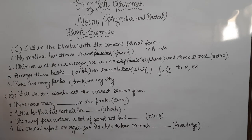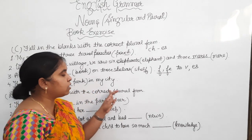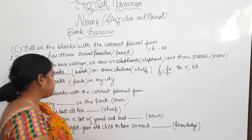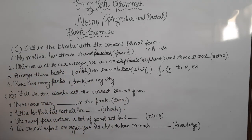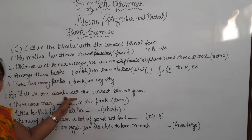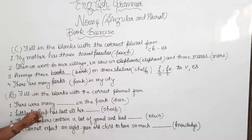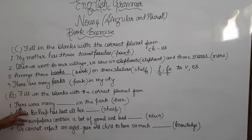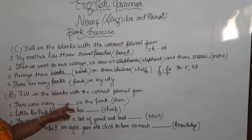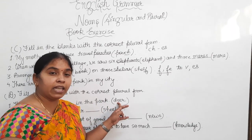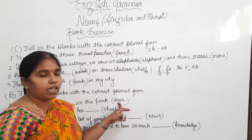Now, next exercise, I mean exercise number D. Fill in the blanks with the correct plural form. Again, we have to do the conversion. We change the singular into plural noun. So, the first sentence is, there were many dashes in the park. And in the bracket, the noun is deer.